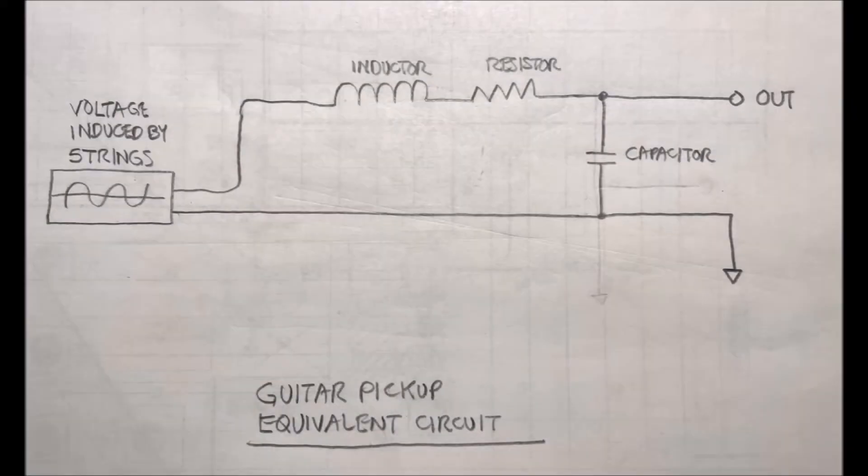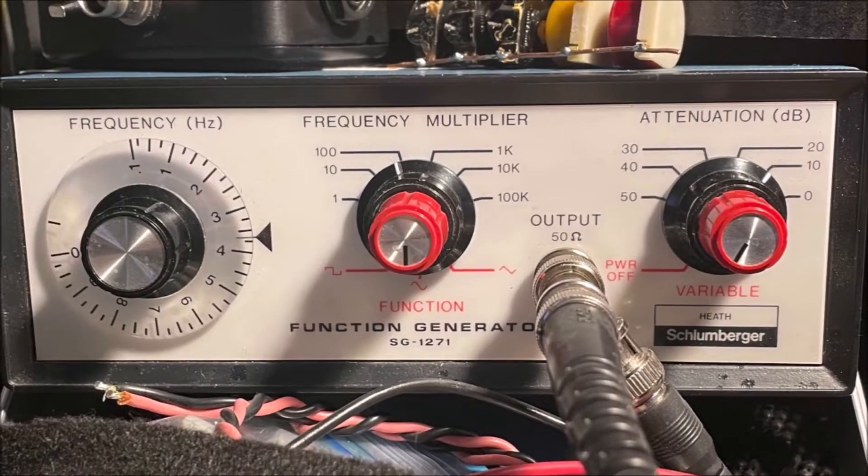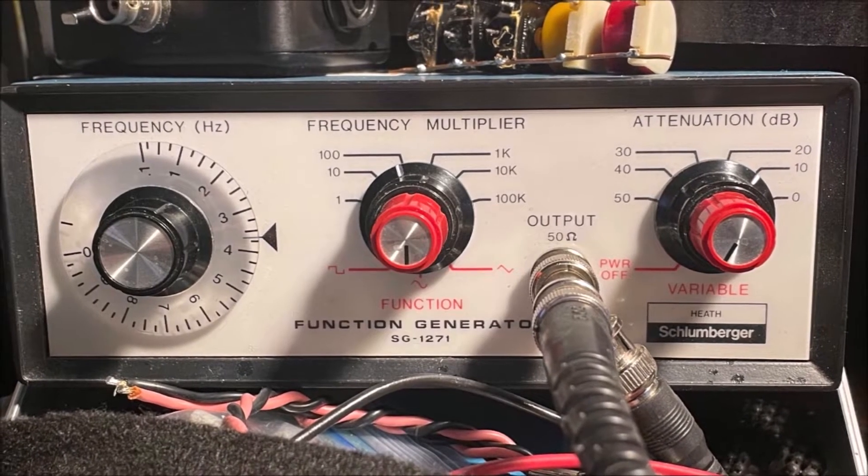The equivalent circuit of a guitar pickup is a voltage source, a large value inductor, a resistor in the kilohm range, and a small value capacitor to ground. With a signal generator, we can directly introduce a sine wave into the guitar pickup to induce a voltage and then look at the frequency response using this simple curve tracer.